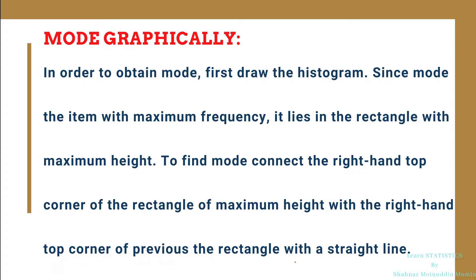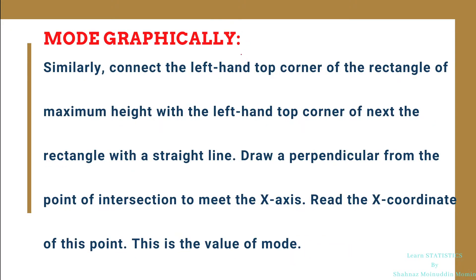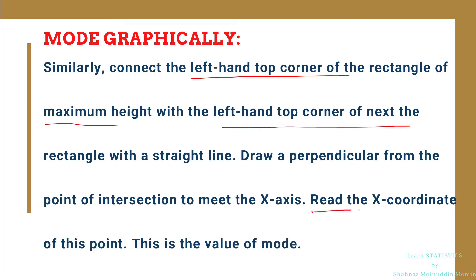After that, connect the left-hand top corner of the rectangle with maximum height with the left-hand top corner of the rectangle which is next to the maximum height rectangle. After connecting these two corners, draw a perpendicular from the point of intersection of these two lines to meet the x-axis and read the x-coordinate of that point of intersection. This is the value of mode.